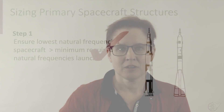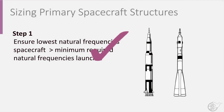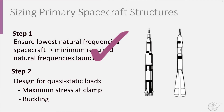Now step 2 in sizing our spacecraft: we must also ensure that the spacecraft can withstand the quasi-static loads. These are the maximum stress at the clamp and the buckling load.